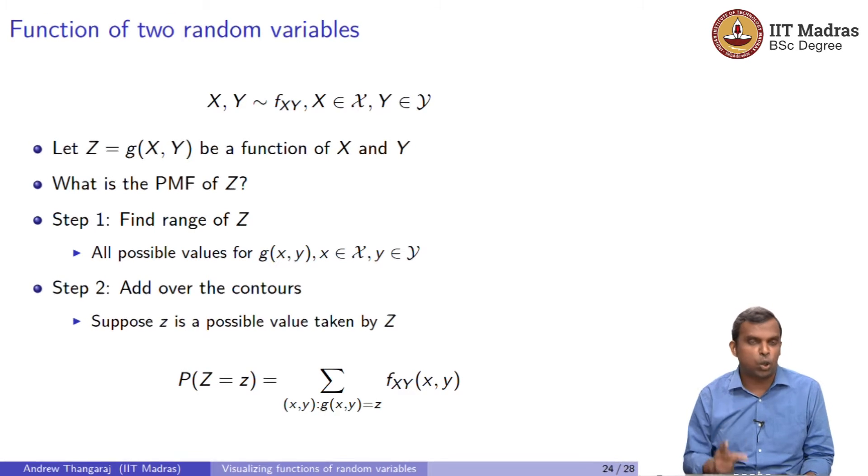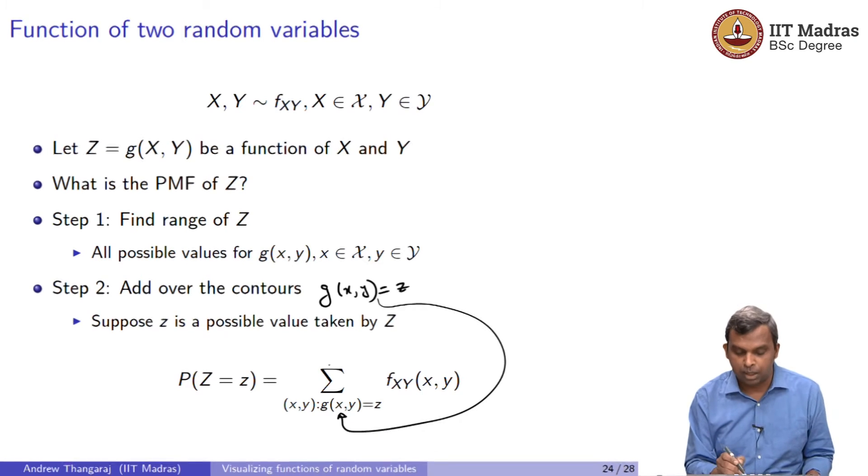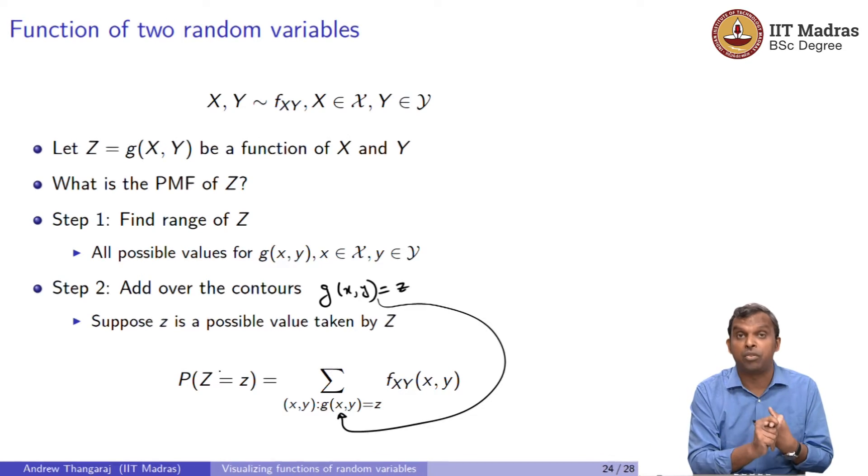Second step is to add over the contours. So, notice what I am saying here. Suppose small z is a possible value taken by Z. The contours that you add over are g of x, y equal to small z. You sum over all the possible x, y such that g of x, y is equal to z. If you have a good picture of g of x, y equal to z, you can simply add up over all those possibilities, the PMF that you have and you will get the distribution.